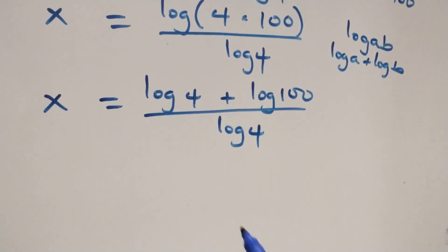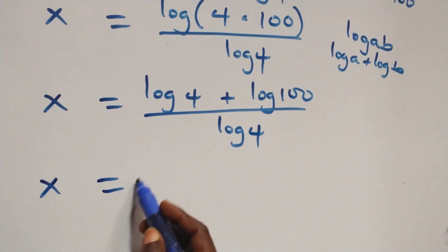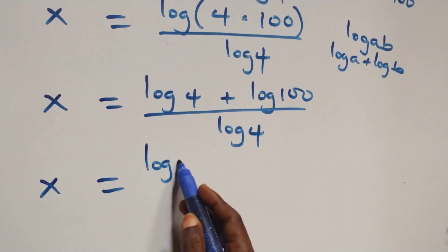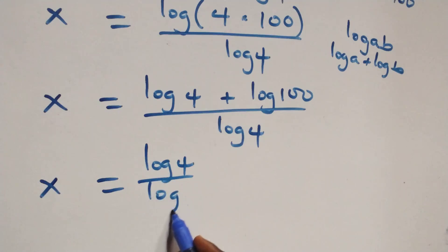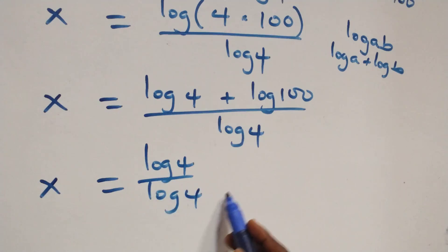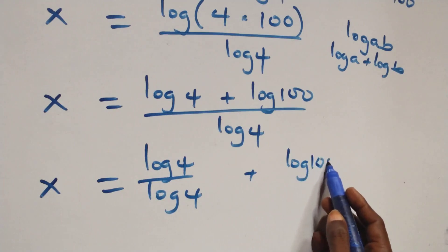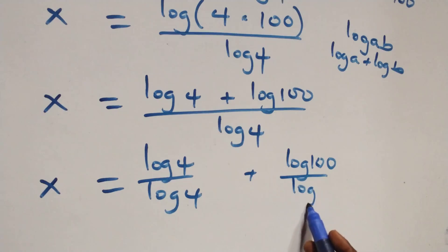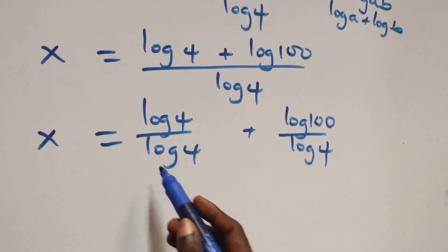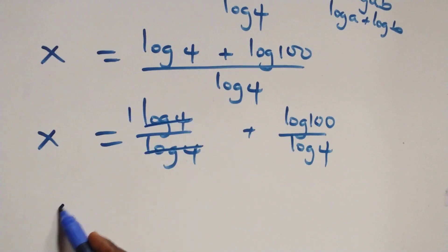From here we separate this into two fractions, and we have x equals to log 4 over log 4 plus log 100 over log 4. Here log 4 cancels each other.